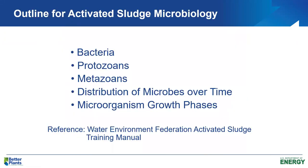For an outline of what we'll cover today: bacteria are the most important microorganisms in the activated sludge process, comprising about 95% of our biomass. Then we have protozoans and metazoans — higher organisms that comprise about 5% of the biomass but are important in the activated sludge food chain. We'll also talk about the distribution of microorganisms over time and the various growth phases in the activated sludge process.